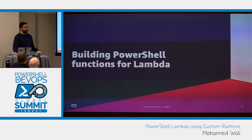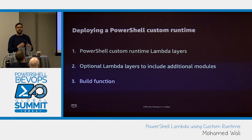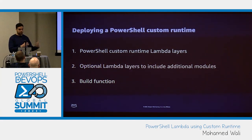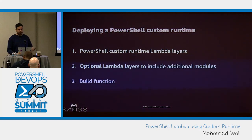So what should you do in order to build that solution? To deploy a PowerShell custom runtime, all you need is to build the PowerShell custom runtime layer — which I'll show you how — and optionally bring any additional Lambda layers such as an AWS Tools PowerShell layer, your own private modules, or third-party modules. Just make sure you're not hitting the Lambda layers limit, which is currently five layers. Once you're done with the layers, feel free to build your own PowerShell scripts on top of the Lambda function itself.